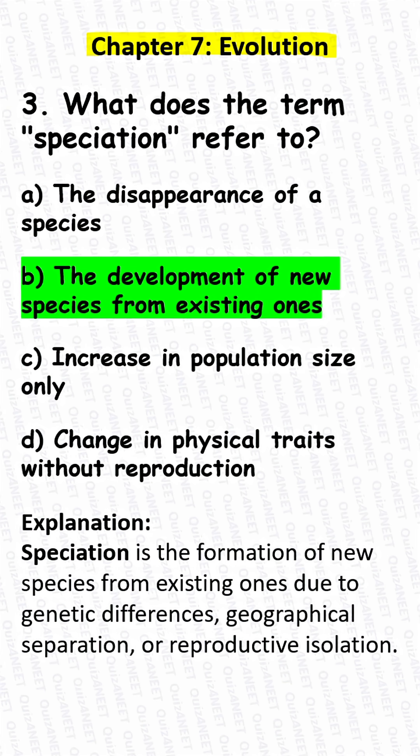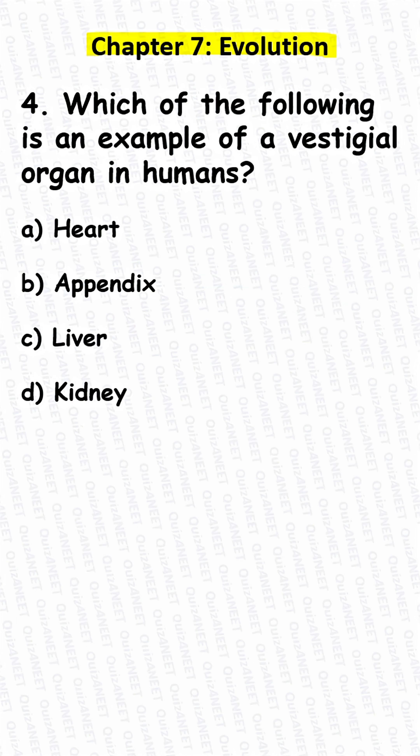Correct answer: B. The development of new species from existing ones. Explanation: Speciation is the formation of new species from existing ones due to genetic differences, geographical separation, or reproductive isolation.